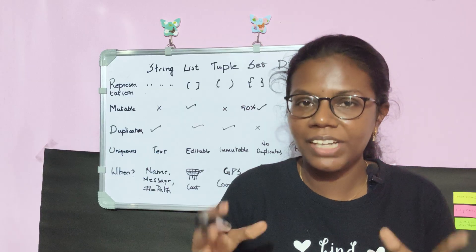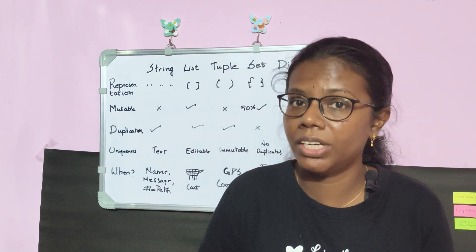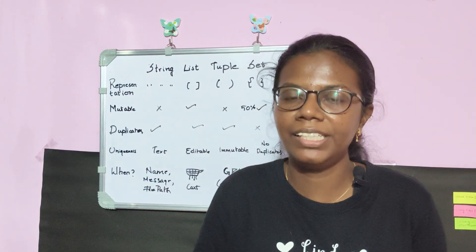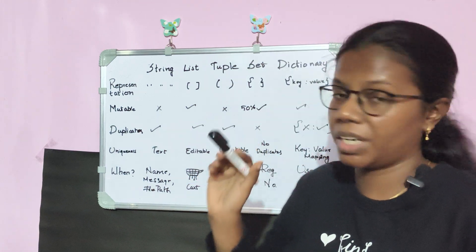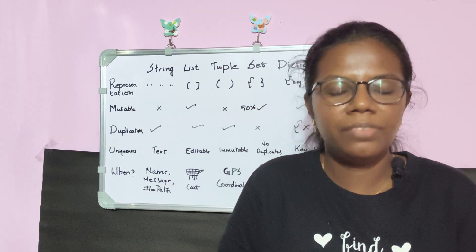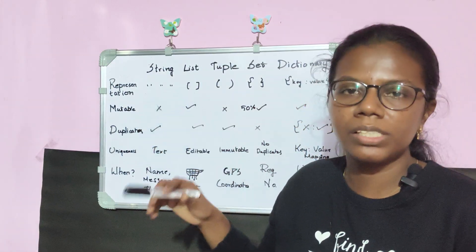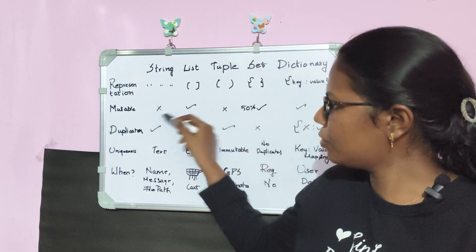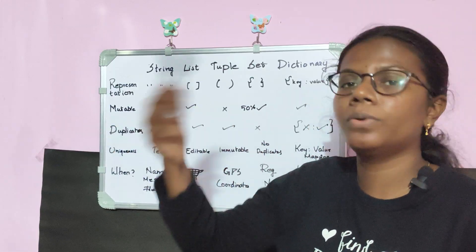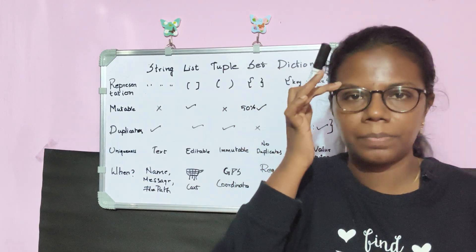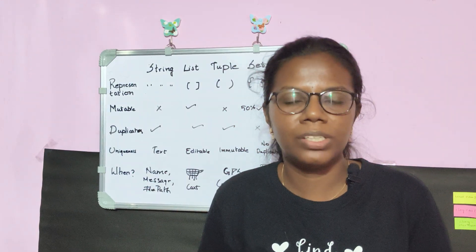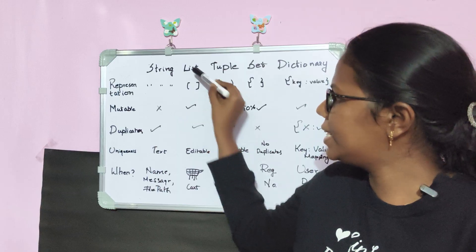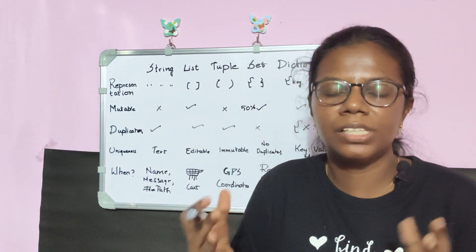Now let's see which data types can be changed and which can't. If I can make any changes to a particular data, it is called a mutable data type; if I couldn't make any change, it is called immutable. First, string — if I store any values inside a string, we can't make any changes, so string is an immutable data type. List data type is generally used when I want to store values that could be edited in the future, so list is a mutable data type.